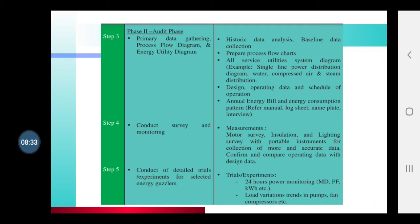Step three: Gather data — whatever primary data you gathered, now create an energy flow diagram from it, as discussed in the previous video. You have to perform full historic data analysis, then create a flow chart. From that flow chart you will understand which energy is being used where and how, where loss is occurring, what the annual bill is, what the energy consumption pattern is, what the log sheets show, what the name plates on machines say — all of this should be captured in an energy flow diagram and utility diagram so anyone can understand it easily.